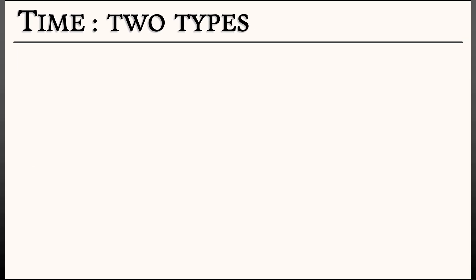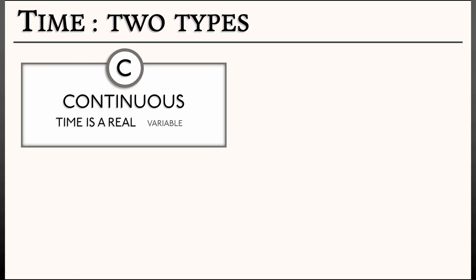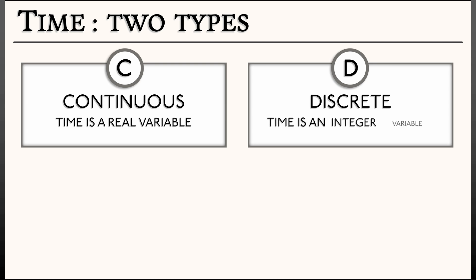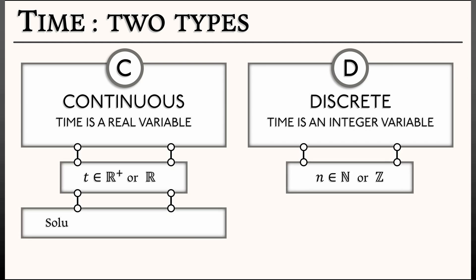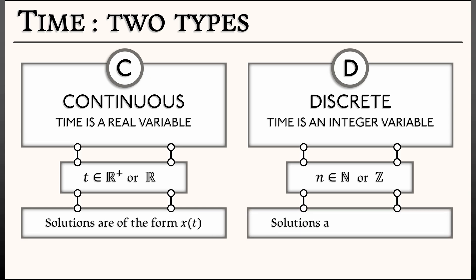Recall that dynamical systems come in two different types: continuous time, where time is a real variable, and discrete time, where time is an integer variable. The solutions in these two different systems really look different. In continuous time, you have a solution of the form x(t), where t is a real variable. Whereas in discrete time, you have a sequence x_n, where n is an integer variable.